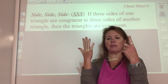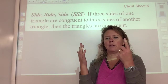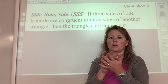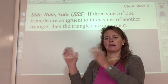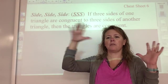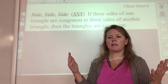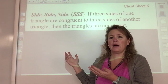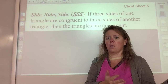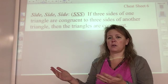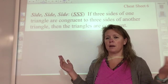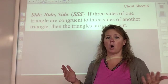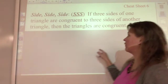In previous sections, the only way we proved a triangle congruent was if you had all three sides and all three angles — six parts every time. Now we just need to prove three sides from one triangle match three sides of another triangle, and they're congruent. Forget about the angles; they're automatically going to be congruent, so you don't have to list them.